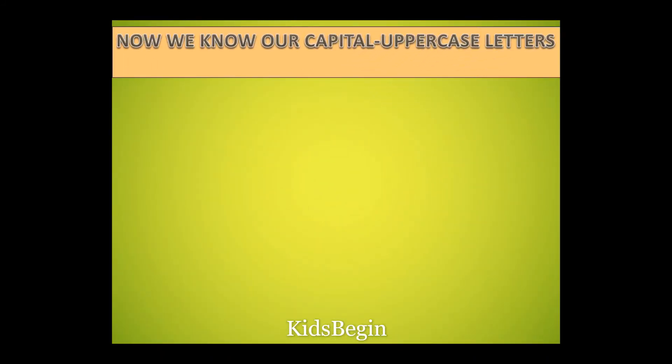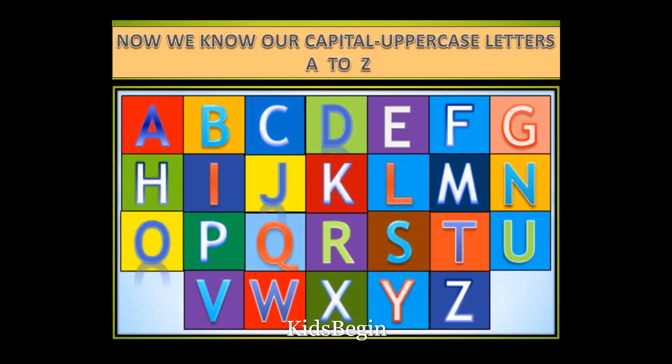Now we know our capital uppercase letters of the alphabet A to Z. Let's read them once more: A, B, C, D, E, F, G, H, I, J, K, L, M, N, O, P, Q, R, S, T, U, V, W, X, Y, Z.